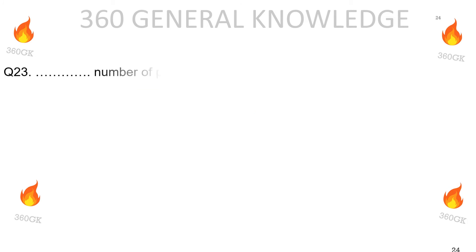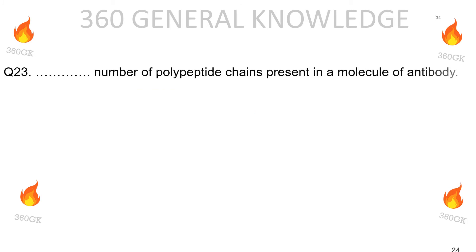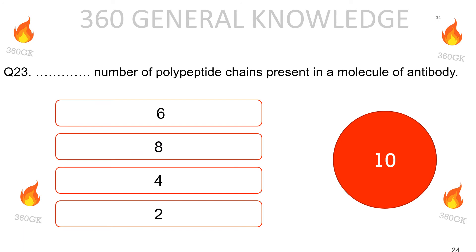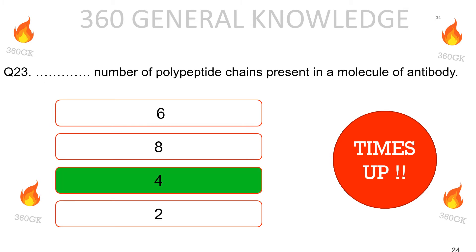What is the number of polypeptide chains present in a molecule of antibody: 6, 8, 4, or 2? The correct answer is 4.